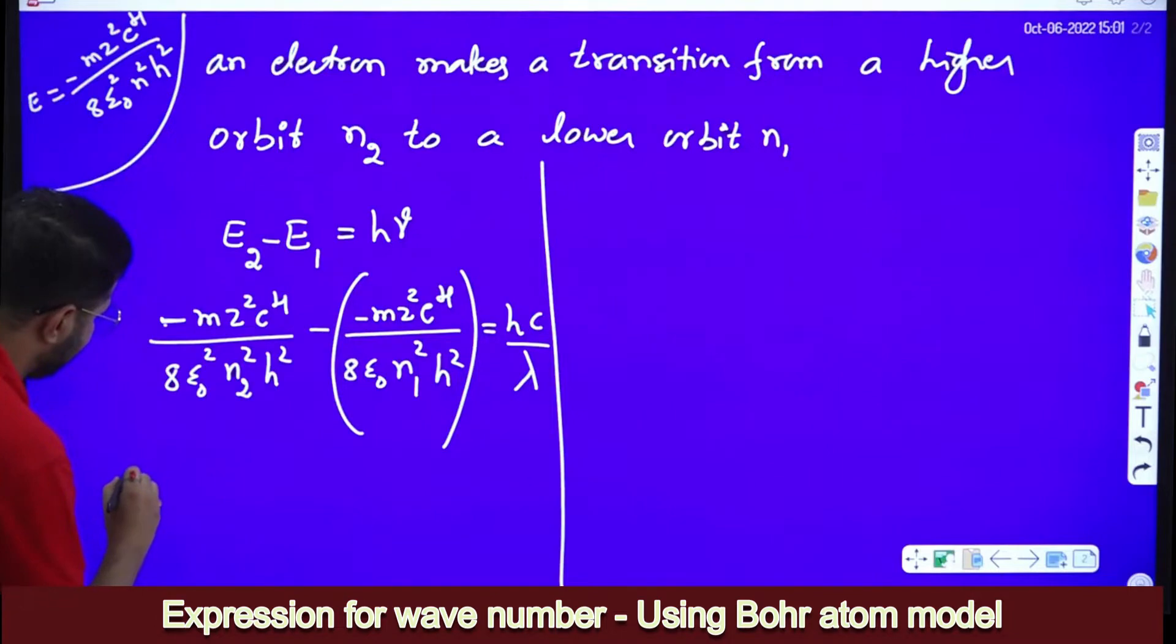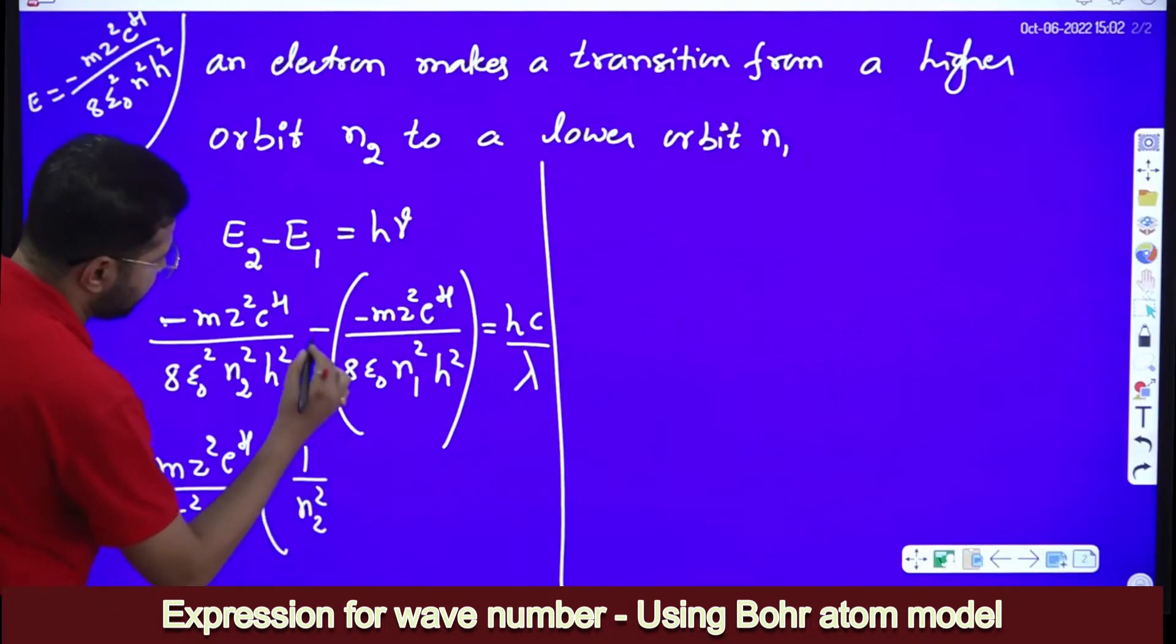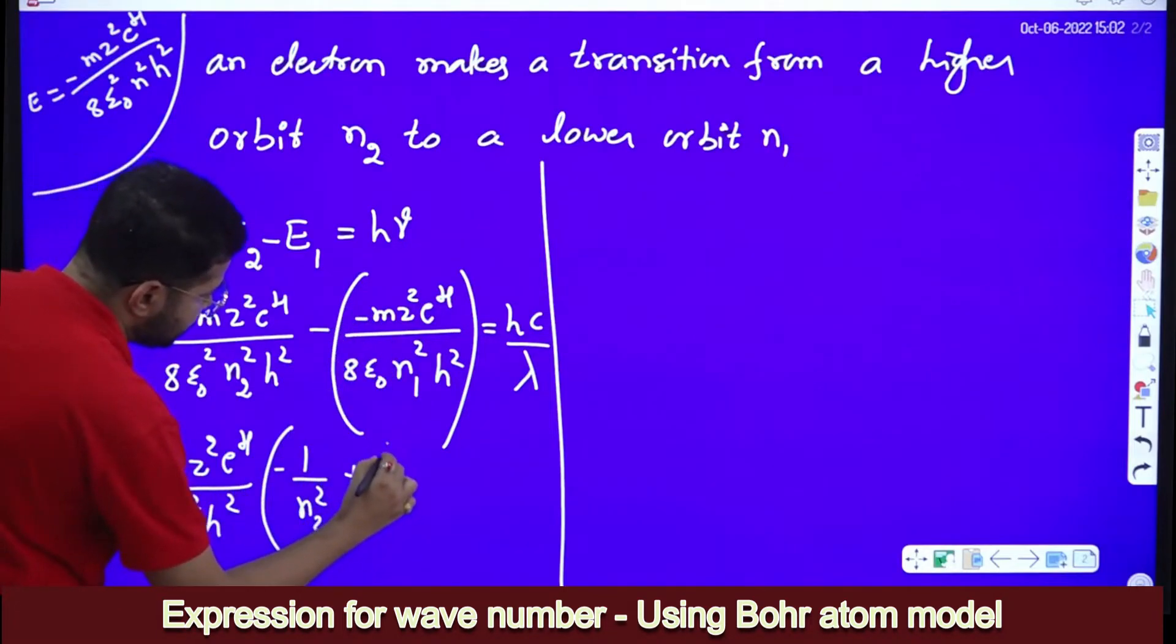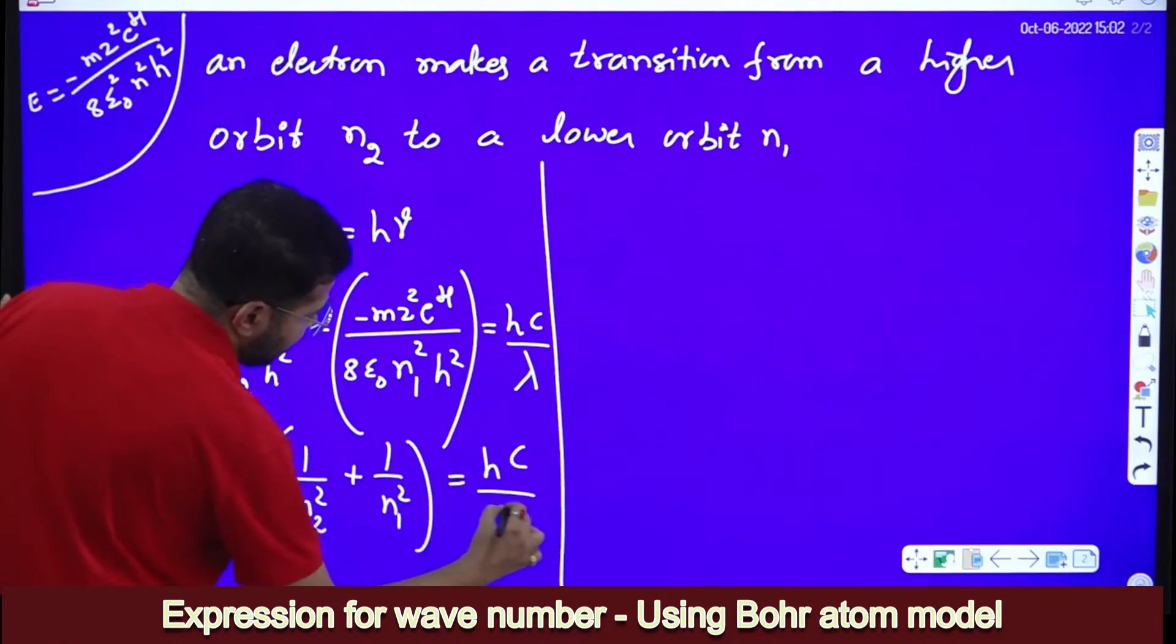I will take outside minus. If I take M into Z square into E power 4 divided by 8 epsilon naught square h square common, then what remains inside is minus 1 by N2 square, this minus of minus becomes plus, plus 1 by N1 square equal to h C by lambda.